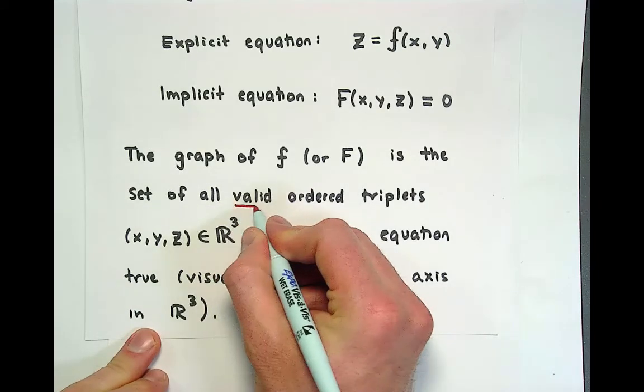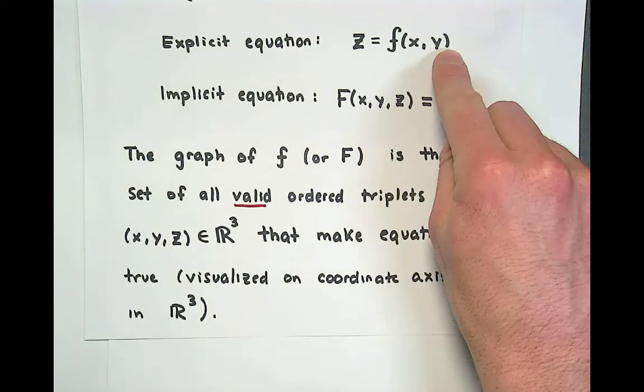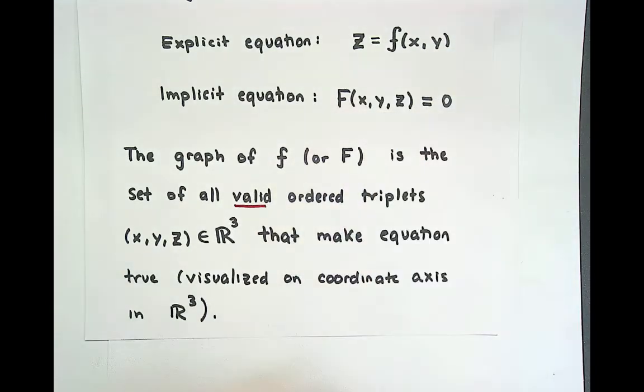Moreover we visualize these valid ordered triplets on the coordinate axis in R3. The word valid is kind of subtle, it means that the x and y are in the domain of the function or that the actual equations make sense there and we'll see what an invalid ordered triplet might be in a future video.